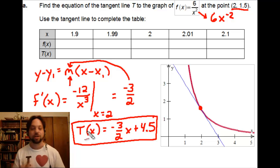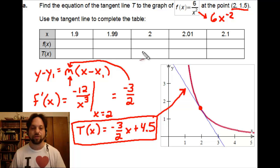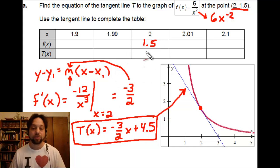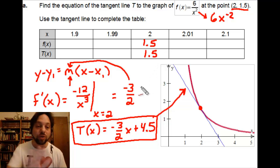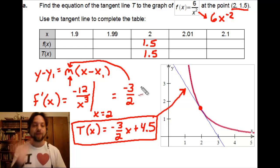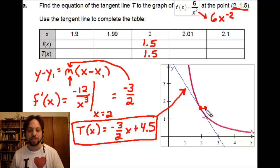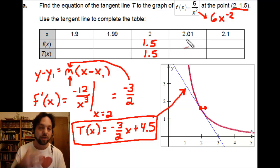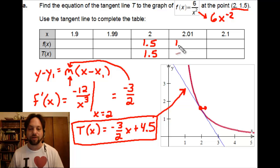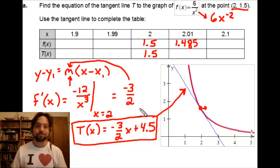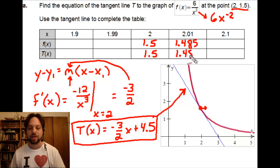Now that we know the equation of our tangent line, when x equals 2, the original function gives 1.5 — that's our point of tangency. Plugging 2 into the tangent line equation also gives 1.5, which makes perfect sense since both curves share that point. Let's creep just a little bit in the positive x direction — say x equals 2.01. Plugging into the original function gives a y value of 1.485, and plugging into the tangent line also gives approximately 1.485.